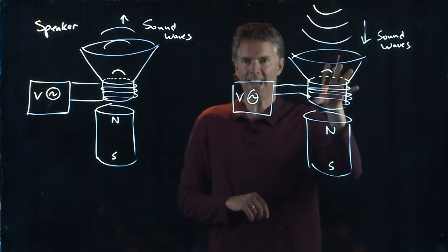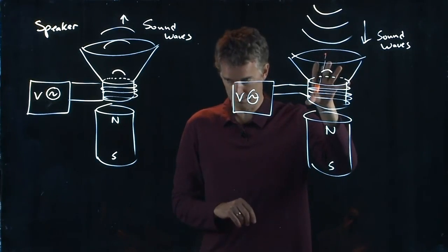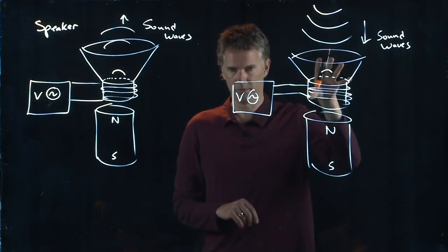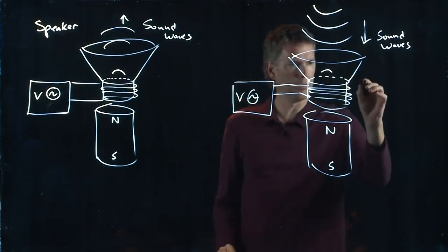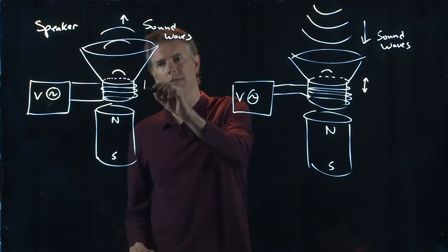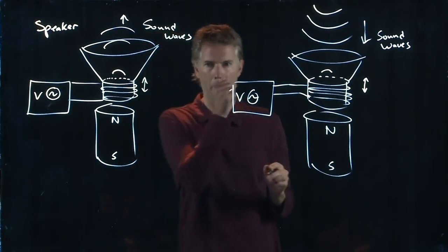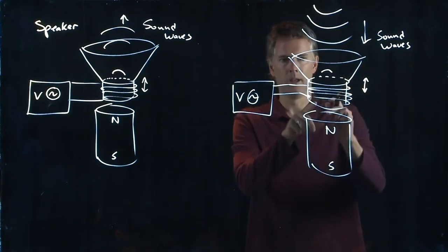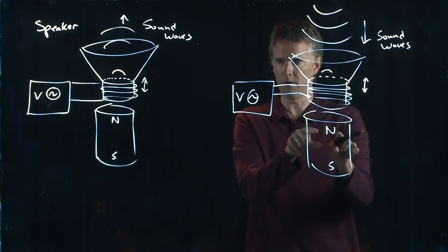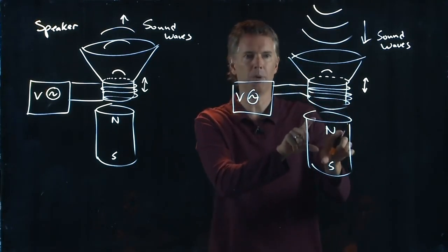If the sound wave hits this speaker cone, what happens? It pushes the speaker cone up and down just a little bit, just like this one over here. And if that speaker cone gets pushed up and down a little bit, this coil is now closer or further from the magnetic field due to this bar magnet.